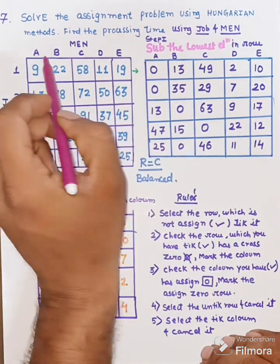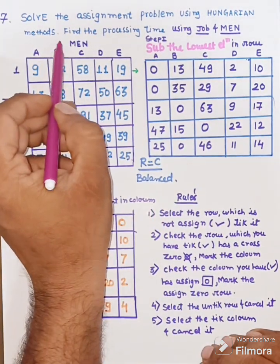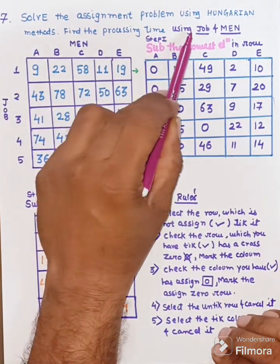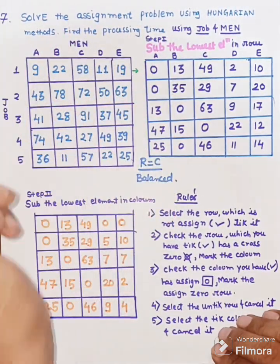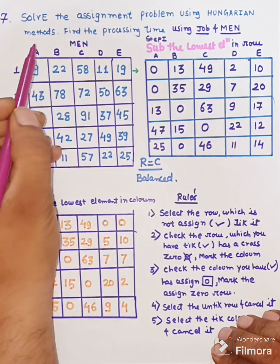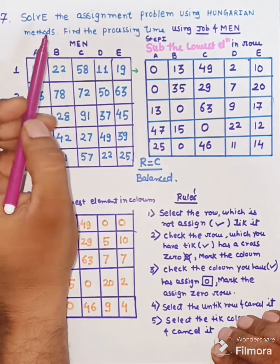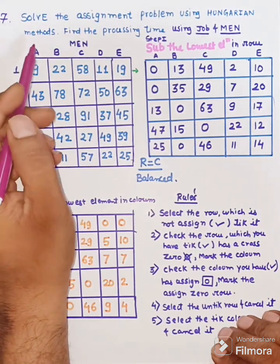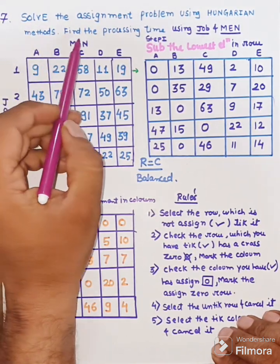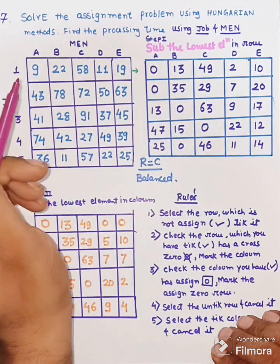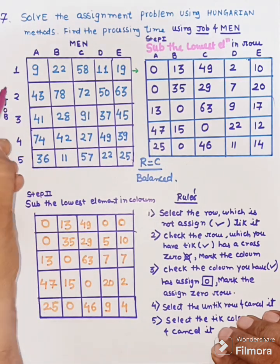Solve the assignment problem using the Hungarian method. Find the processing time using jobs and men. Our question is: what assignment problem uses the Hungarian method? Processing time using jobs and men.